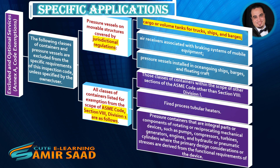Specific Applications — Excluded and Optional Services, Annex A: The following classes of containers and pressure vessels are excluded from the specific requirements of the API 510 inspection code, unless specified by the owner-user: pressure vessels on movable structures covered by jurisdictional regulations; cargo or volume tanks for trucks, ships, and barges; and air receivers associated with braking systems of mobile equipment.